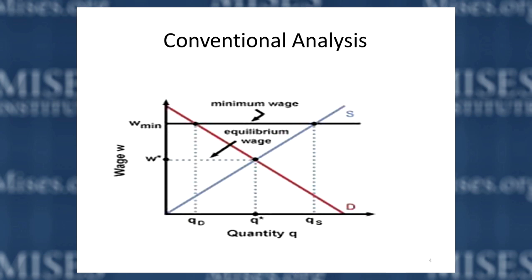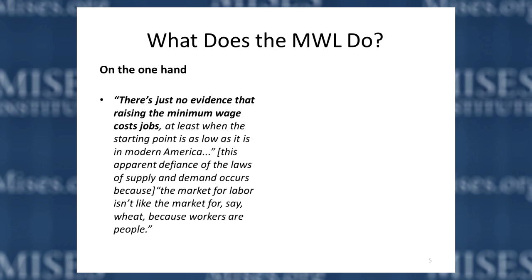Austrian economic analysis takes a much more holistic view, trying to understand what's going on in labor markets beyond just wage rate and employment/unemployment. As a result of their bare-bones approach, there's a lot of confusion within mainstream economics about what will result from a minimum wage. On one hand, you have economists who say there's just no evidence that raising the minimum wage costs jobs, at least when the starting point is as low as it is in modern America.